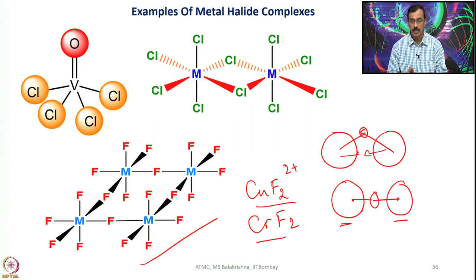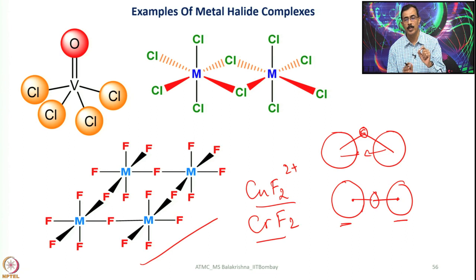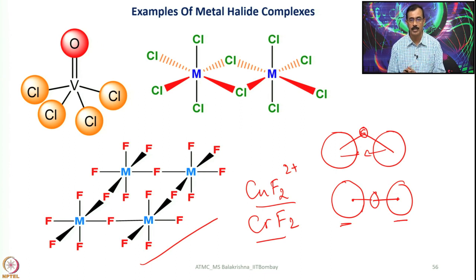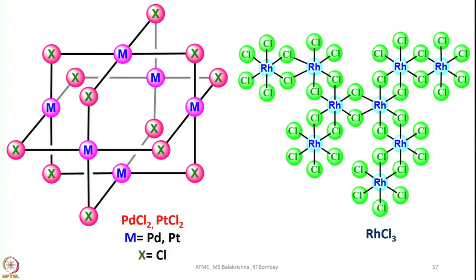With linear fluoride bridging, trimeric structures are difficult due to ring strain, so tetrameric structures are adopted, as seen with CuF2 and CrF2. When we say CuF2 or CrF2, we should not think they have only two ligands in a linear arrangement — in the lattice they have octahedral geometry. Each copper or chromium appears to have two fluorine atoms in terms of composition, but in the lattice the octahedral arrangement is present. For CuF2, being a D9 system, tetragonal elongation is observed.